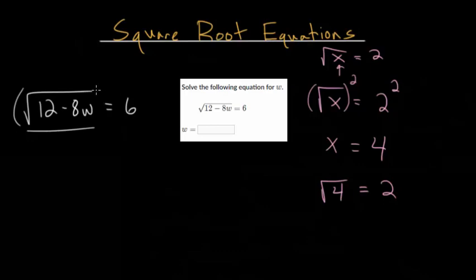From here, we can just square each side of the equation. Again, the square root and the square are going to cancel each other. It's just like adding 5 and then subtracting 5. You just get back what you start with or what's on the inside. So it becomes 12 minus 8w, and 6 squared is 36.